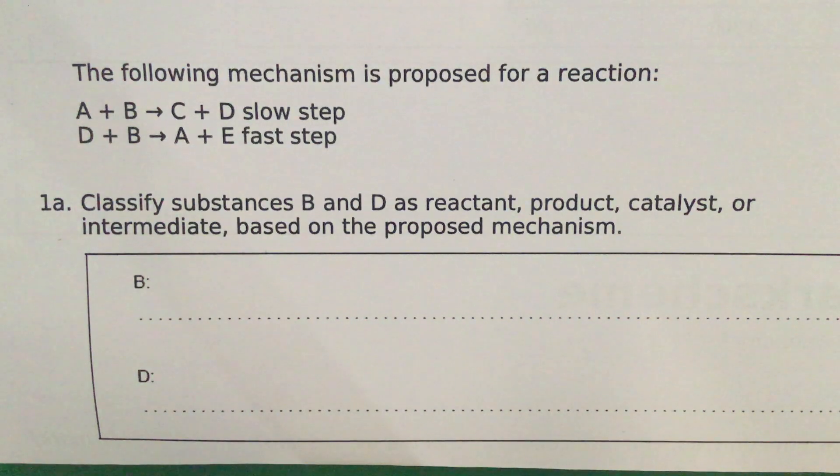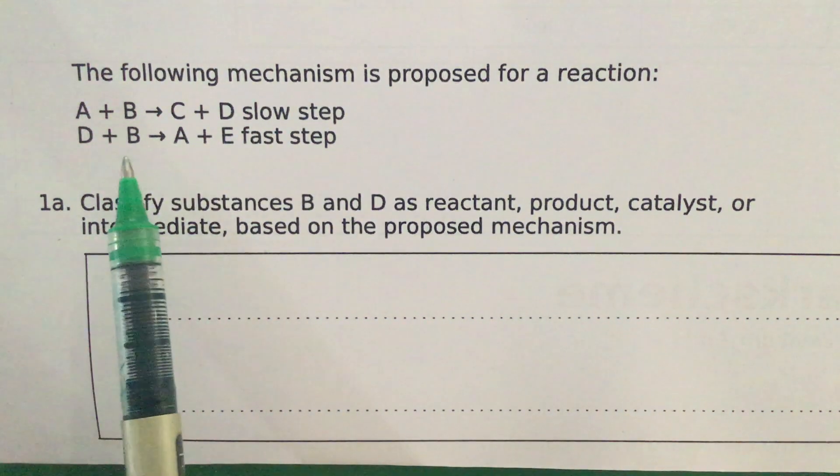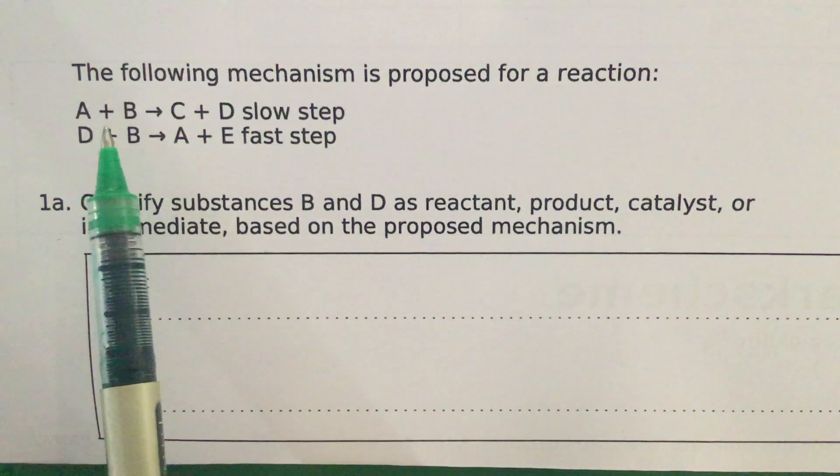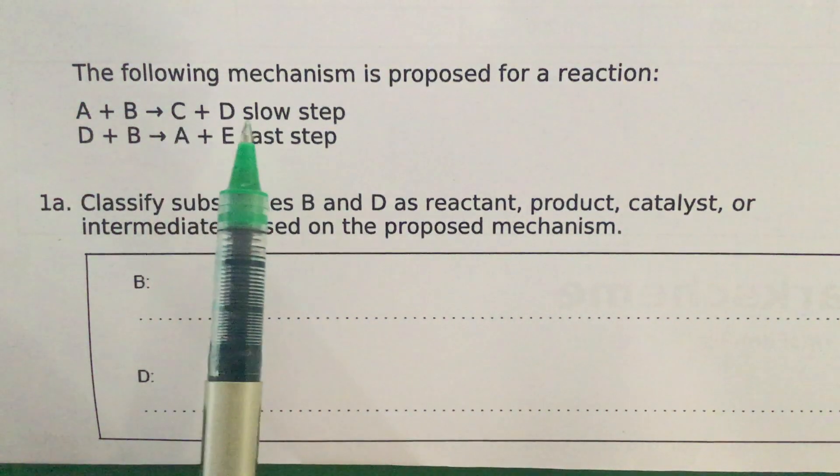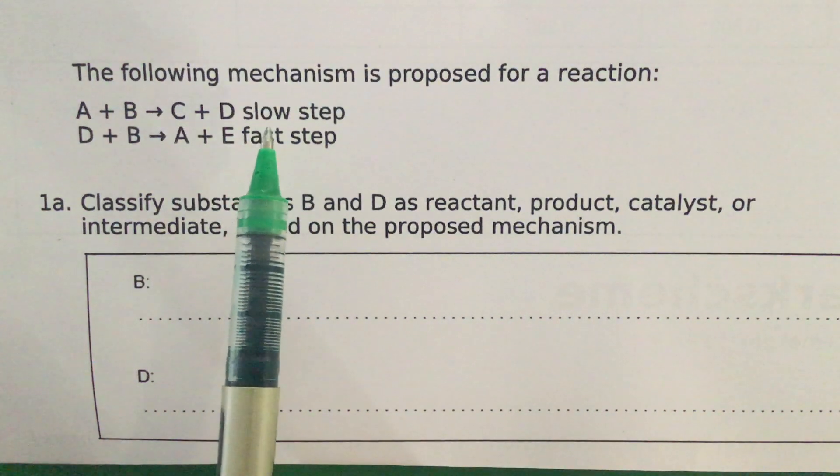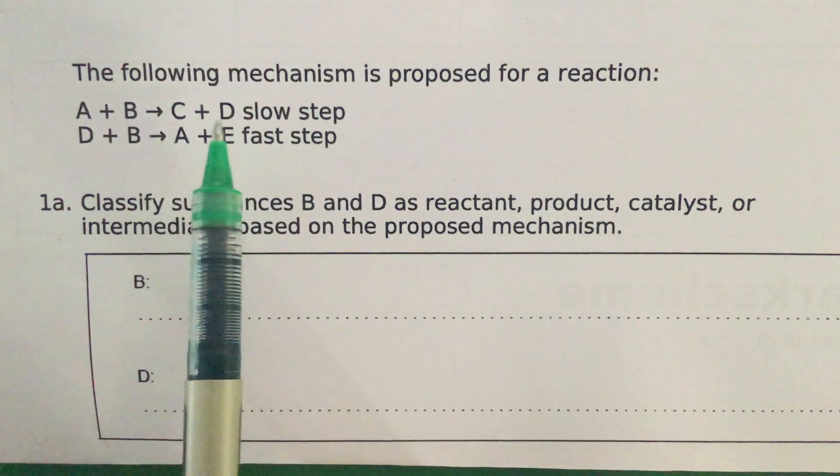Let's consider this question dealing with topic 16.1. The following mechanism is proposed for a reaction. These steps here: A plus B gives C and D, that is the slow step, and then C and D